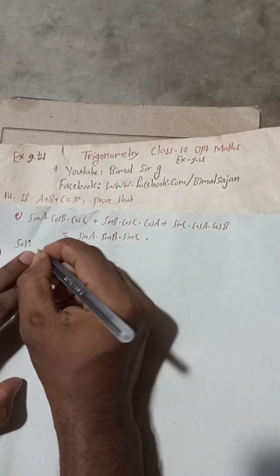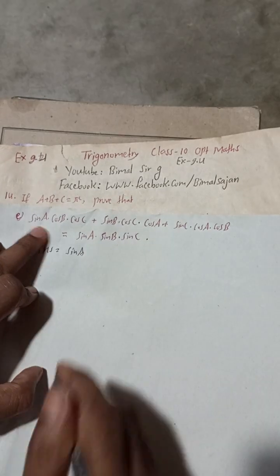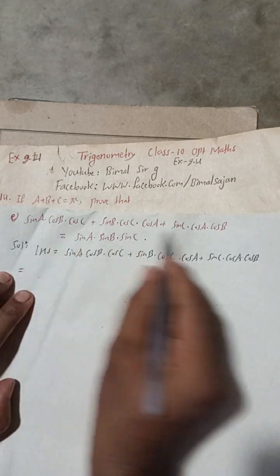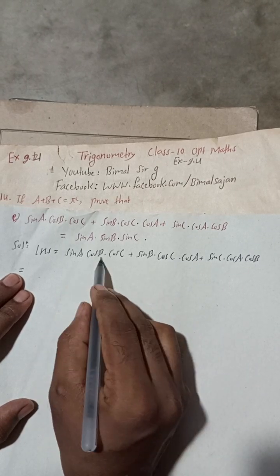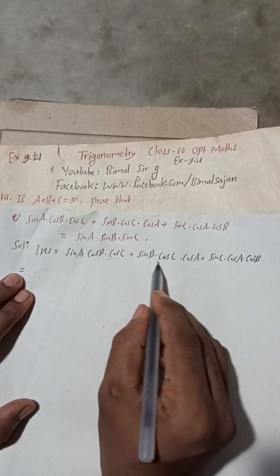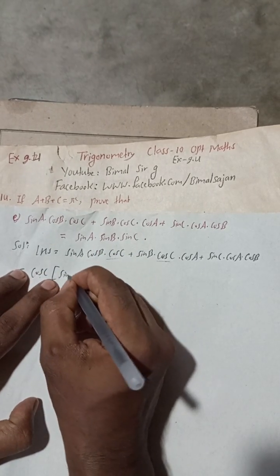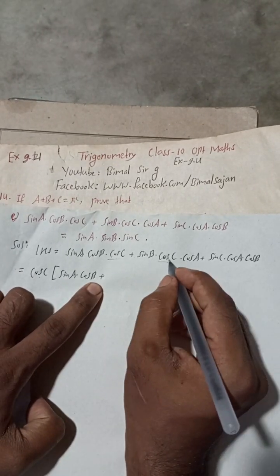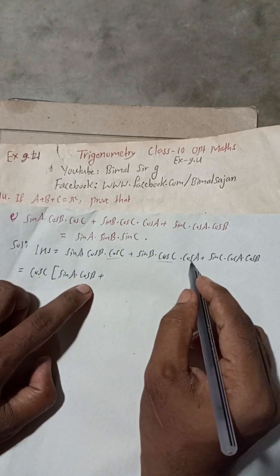Here, LHS is equal to sine A. This is the LHS part. Now you can see from these two terms, sine A and sine B gives cos B. So cos C is common — take cos C as common factor. The remaining expression is inside the bracket.